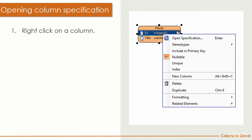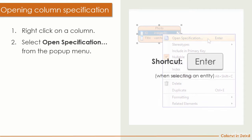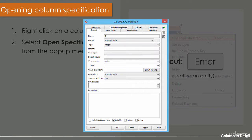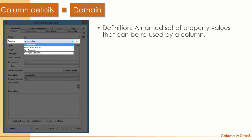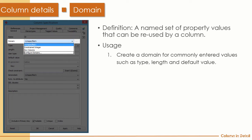You can configure column detail using the specification dialog box. To open it, right-click on the column and select Open Specification, or select the column and hit Enter. Then you will see the specification dialog box for your selected column. The first field is Domain — same as the domain we introduced for the table — it contains a reusable set of values you can apply when designing your database.